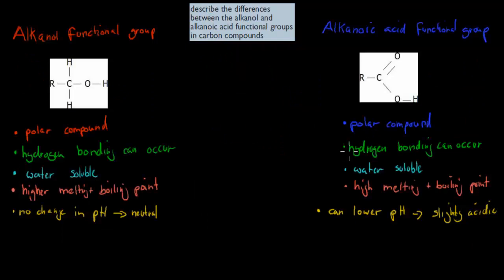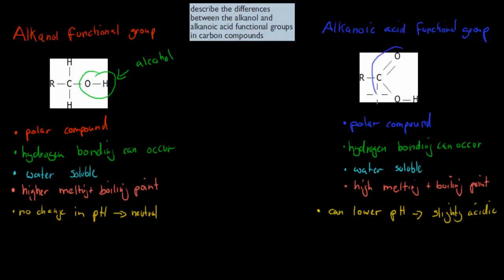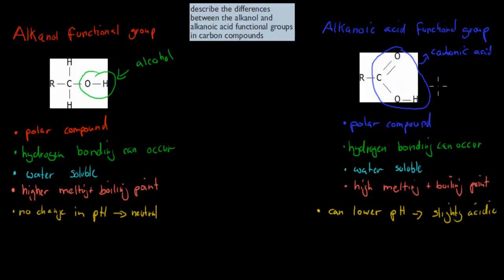Looking at the functional groups again: we have the hydroxide group, which we call the alcohol group. The alcohol itself is just a hydroxide. On the flip side, we have the carboxyl acid group — a carbonic acid — where the carbon has a double bond with one oxygen, and a hydroxide group on the other. Overall, we can write it as COOH, where one O is a double bond and the OH comes from the hydroxide group.